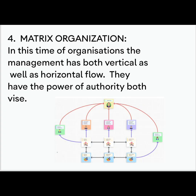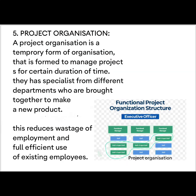Fourth is the matrix organization. In this type, management has both vertical as well as horizontal flow. They have power and authority in both directions, so they can communicate horizontally as well as vertically. Last is project organization, which is a temporary form of organization formed to manage a project for a certain duration of time. When we build a project, we keep specialists from different departments who are brought together to make a new product. This reduces wastage of employment and makes full use of the efficiency of existing employees.